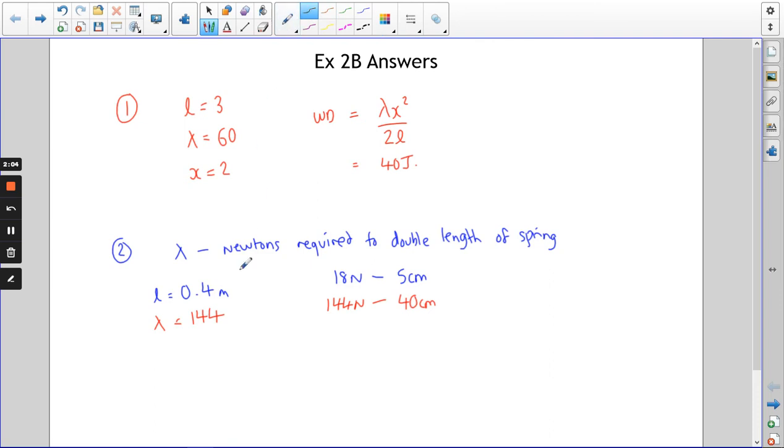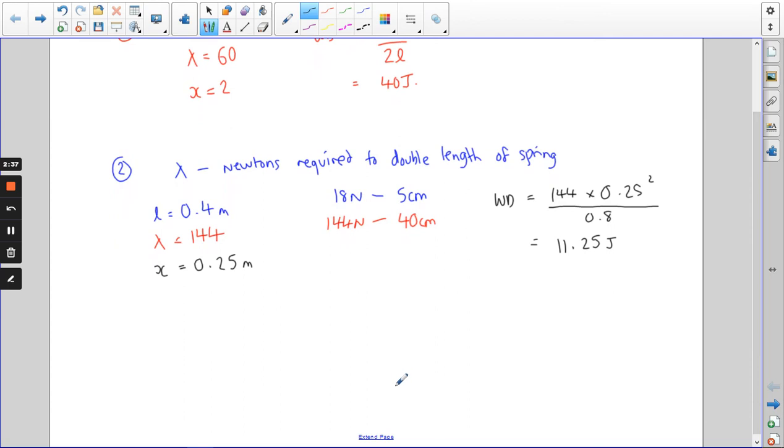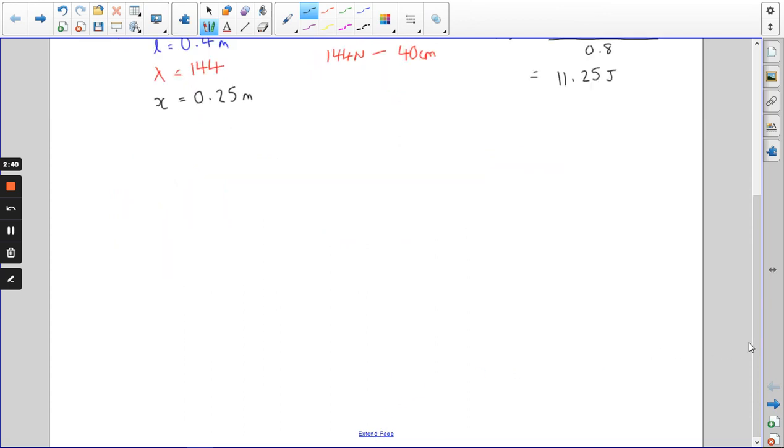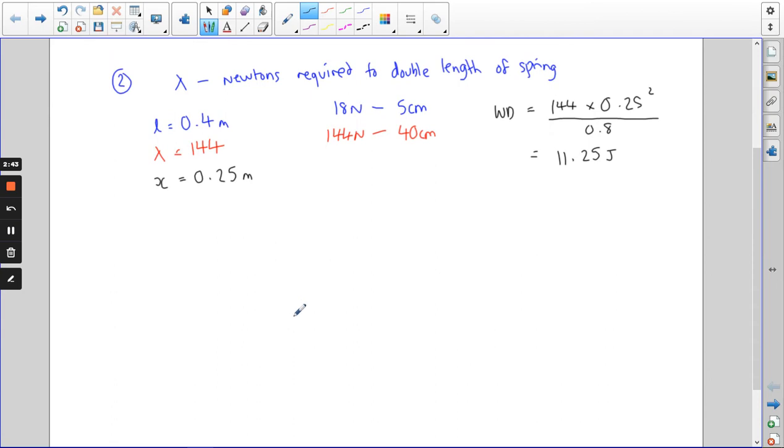After that, we know that they want to squash it into a box of 15 centimetres, so the compression needs to be 0.25. We need to lose 25 centimetres if it's going to fit into a 15 centimetre box. The work done will be 144 times 0.25 squared over 0.8, double the natural length. That's 11.25 joules. You may have found another way of doing that one, but the easiest way, I think, was to find lambda first, the amount of force required to double the length. And once you've got lambda, you can use the standard formula.